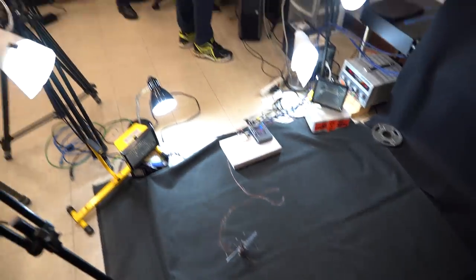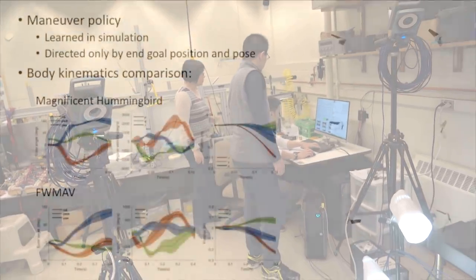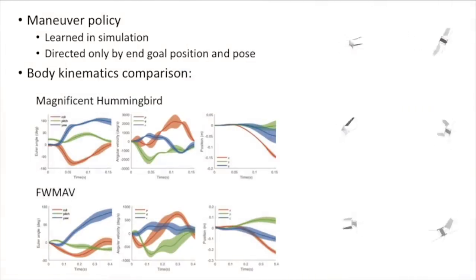We use all different control algorithms, reinforcement learning, AI. So we train the robot. The robot can also behave similarly to the hummingbird.